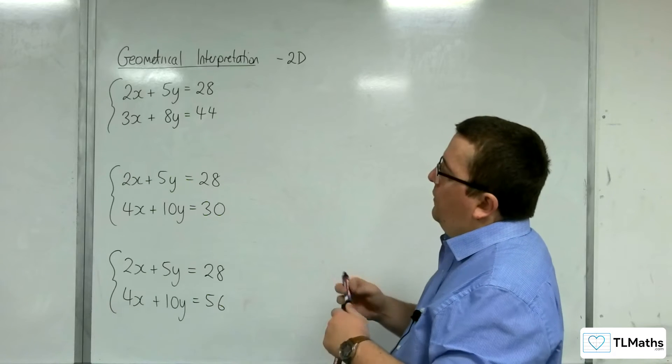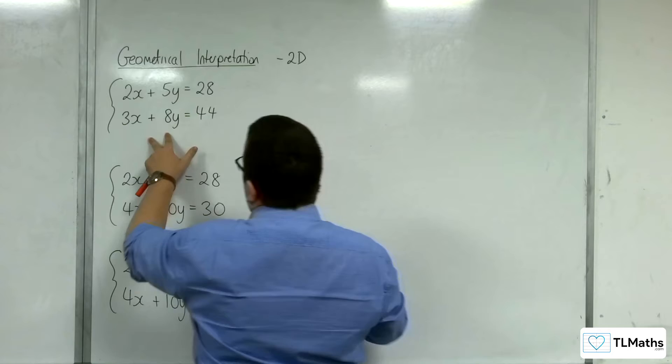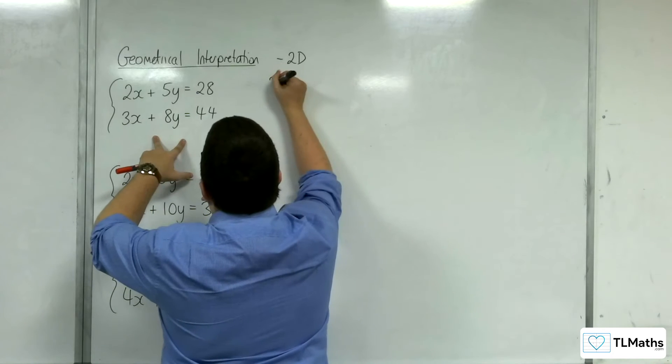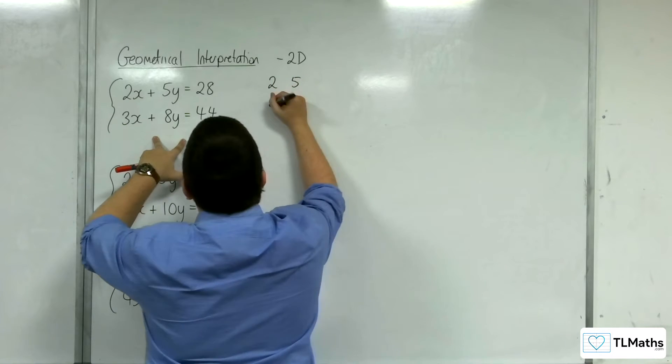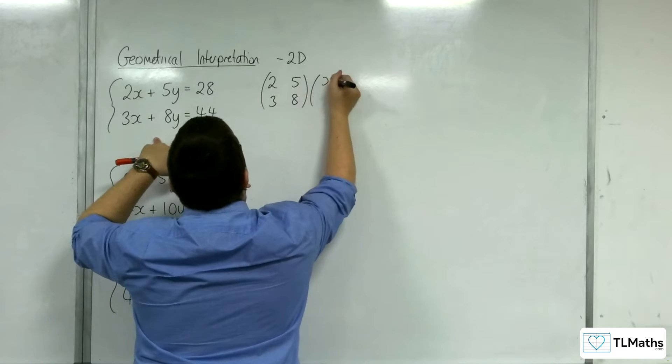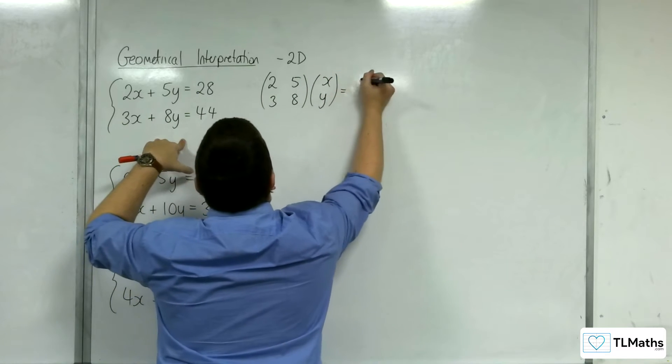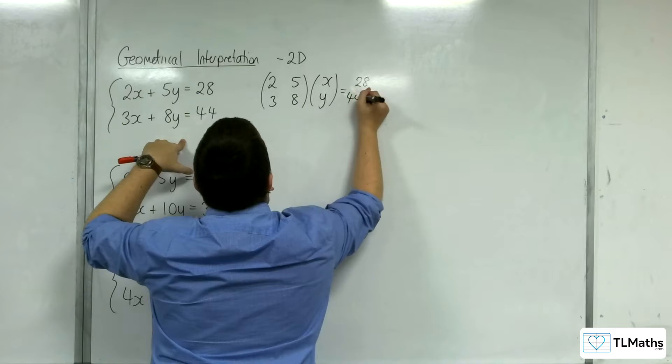So here I have three pairs of simultaneous equations. Now if we have a look at the first one, then we would have 2, 5, 3, 8 multiplied by x, y is equal to 28, 44.